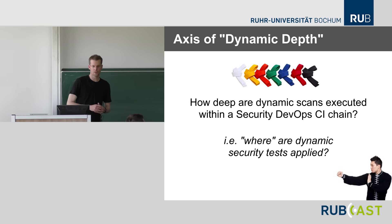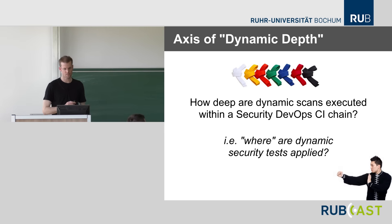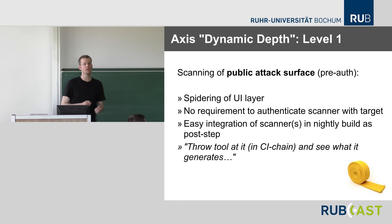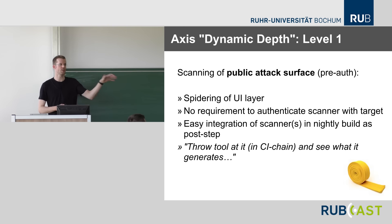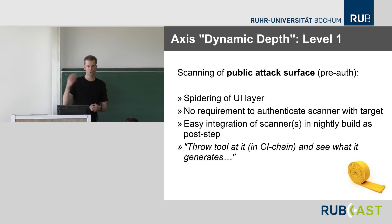The first and most important axis is dynamic depth — basically about where dynamic security tests are applied inside a build automation system. The yellow belt, the first level, is to scan web applications for the public attack surface — just that. Pre-authentication, so not logged in with the application. Just throw a tool at it and see what it does during the build. This is a nice spidering of the UI layer with no requirement to authenticate the scanner, easily integrated into nightly builds as a post-step.